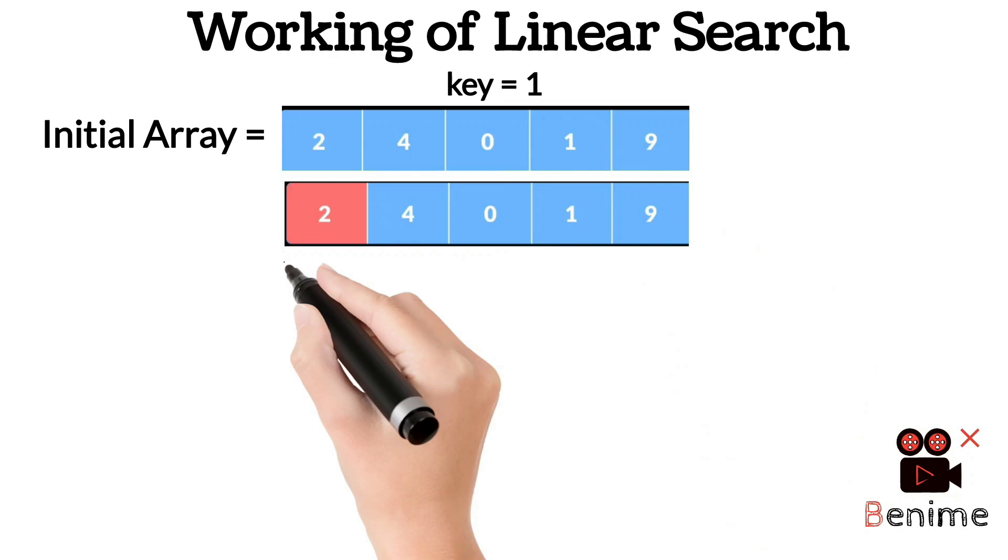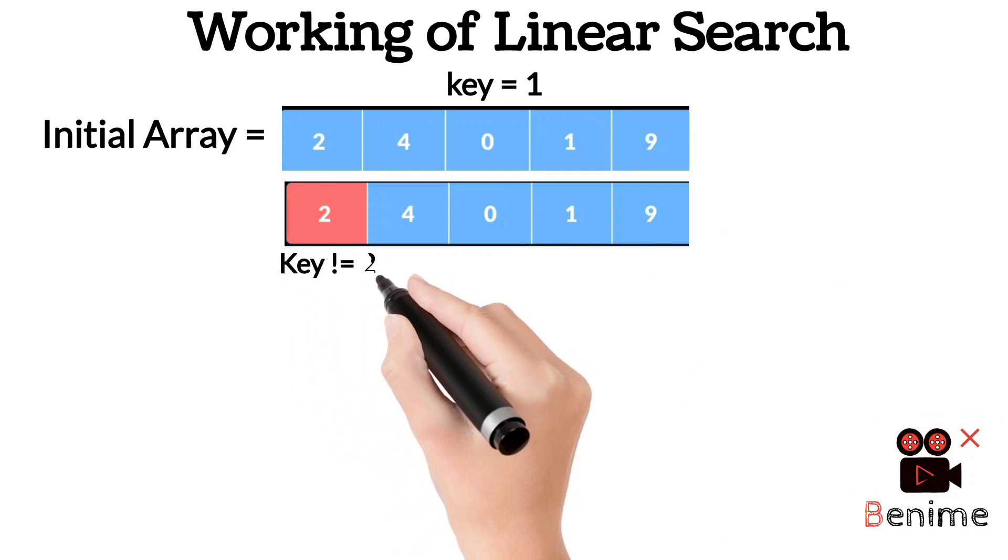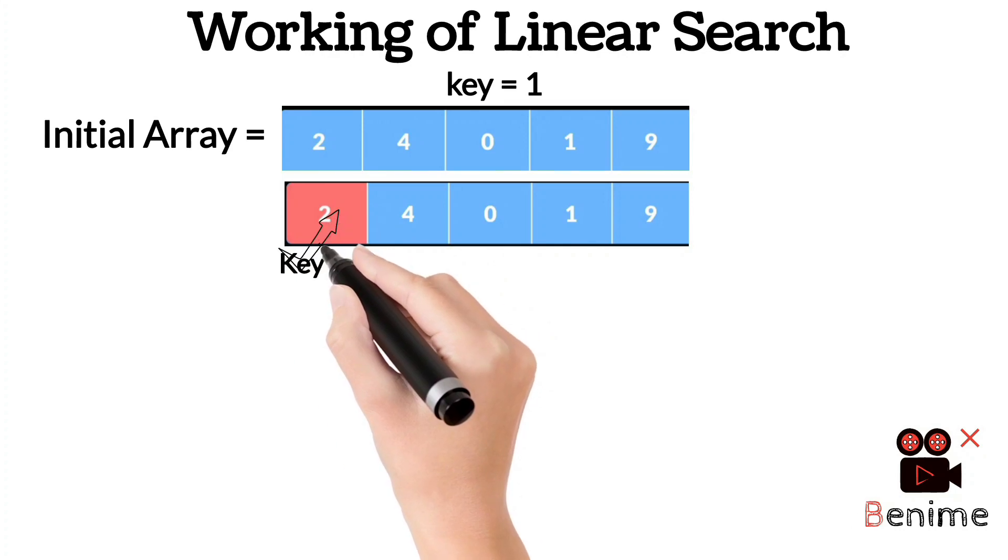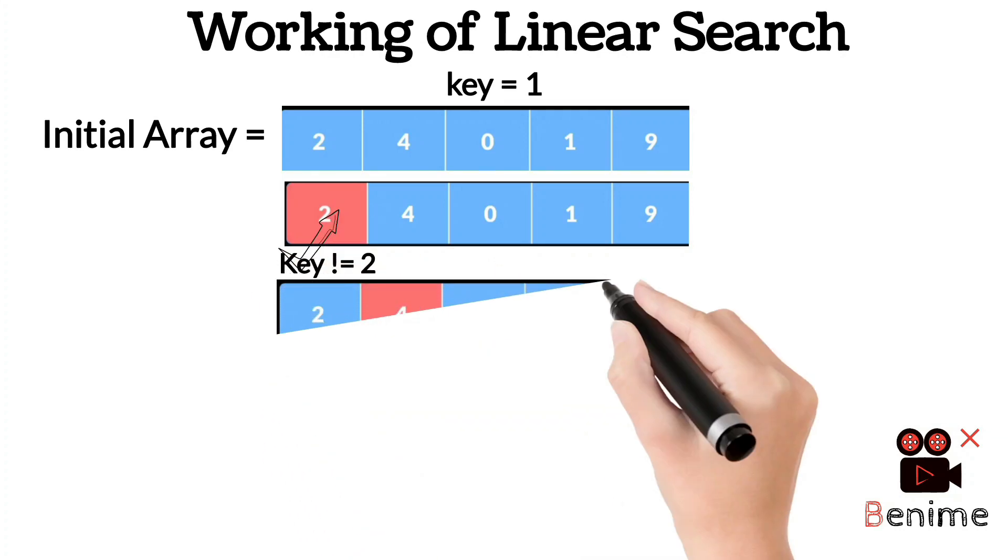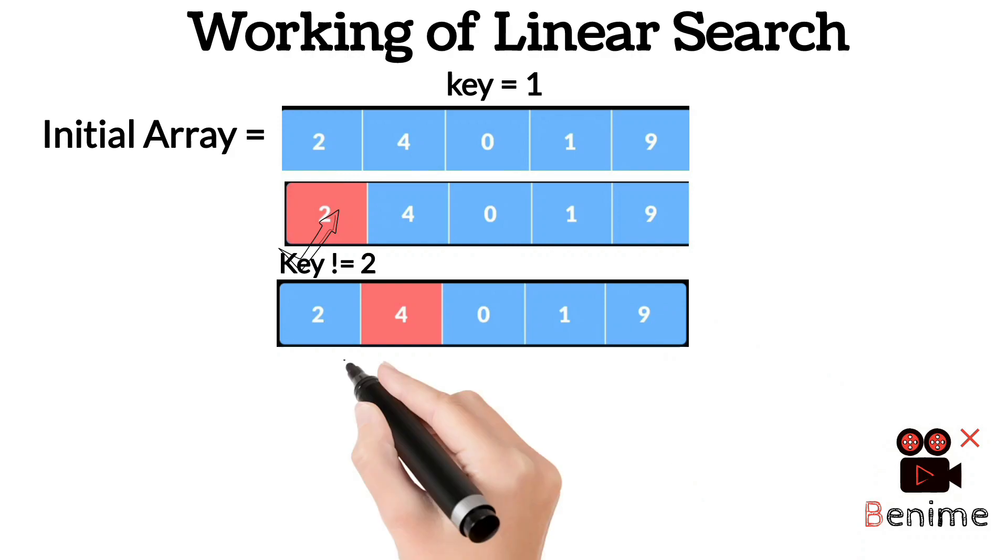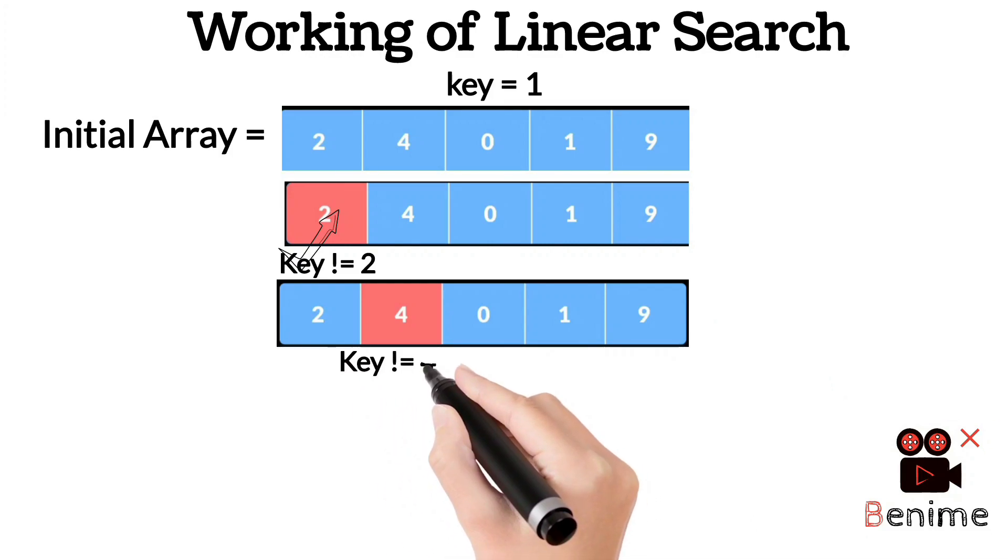First, in the first iteration, the element 2 was searched but the key is not matched with 2, so the condition is false. In the next iteration, the element 4 is found. The key element is compared with 4 - it is not equal, so the condition is again false.